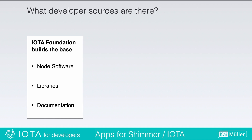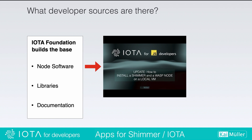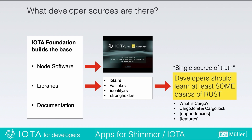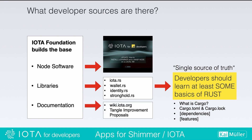In parallel, I looked at the developer sources the IOTA Foundation provides. There is the node software and the libraries. The Rust libraries are called the single source of truth according to IOTA — in my opinion developers should learn at least some basics of Rust. I used cargo.lock a lot to understand the dependencies used in the projects. The wiki and the Tangle Improvement Proposals were also useful.